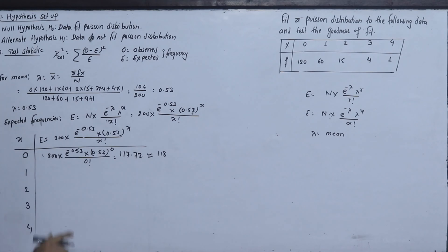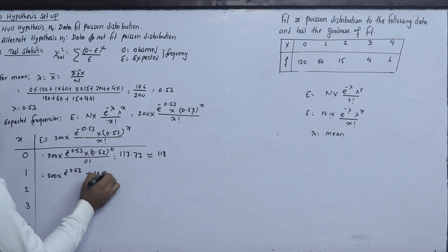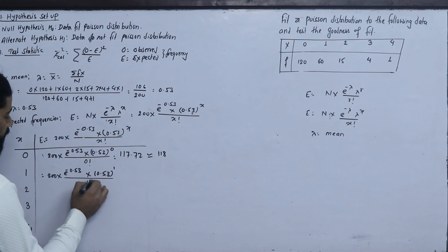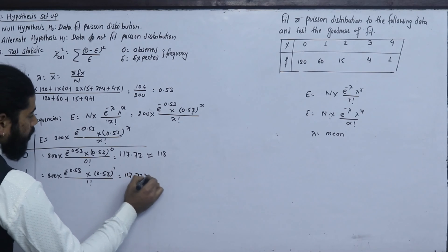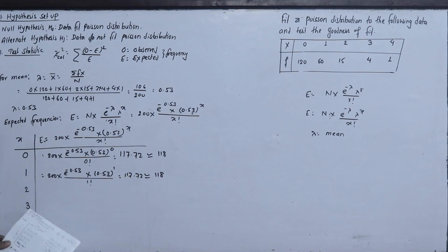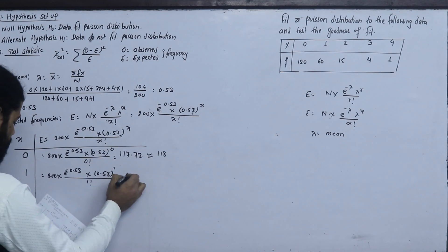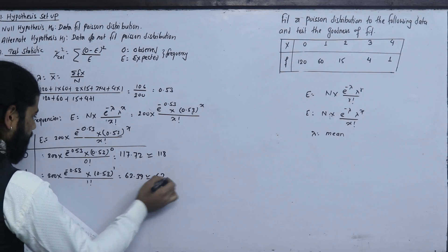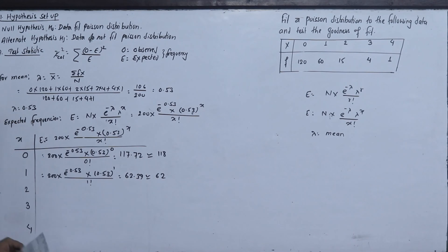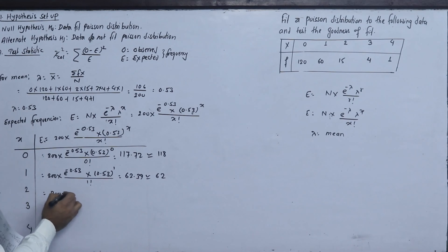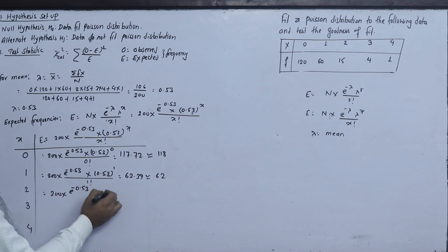We make a table of expected frequencies. For x=1: 200 × e^(−0.53) × 0.53^1 / 1! also gives 117.72, which we take as 118. For x=2: the calculation gives 62.39, which we round to 62.